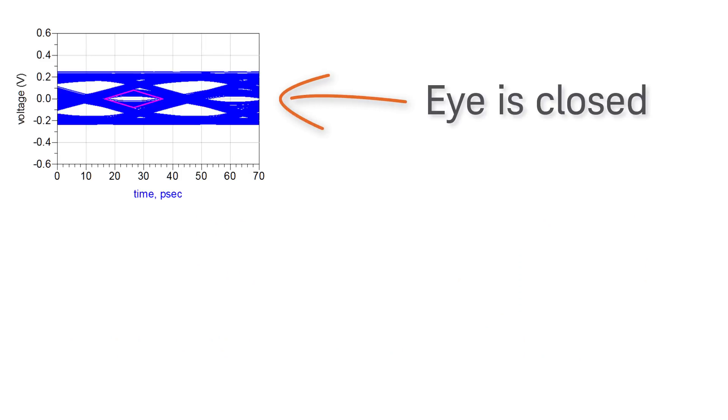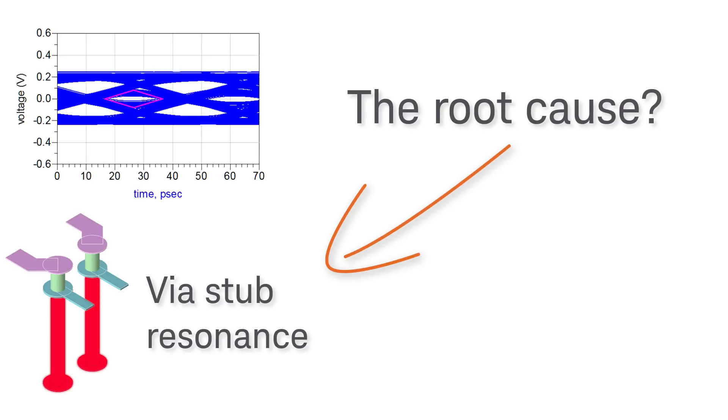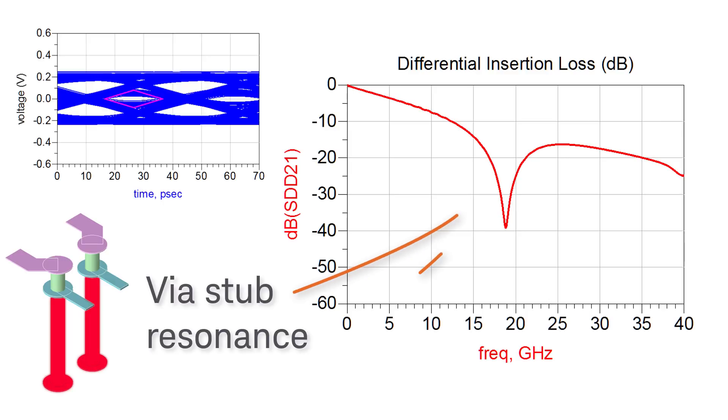At this point, we are sure of the root cause of our signal integrity problem. The root cause is the via stub resonating at frequency close to the Nyquist, resulting in a dip in the insertion loss, distorting the frequency spectrum of the input signal and degrading the eye.